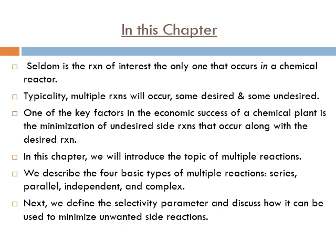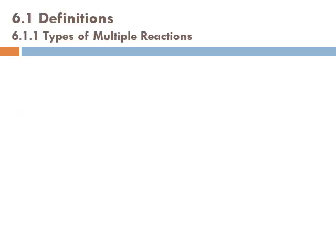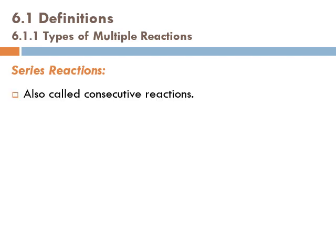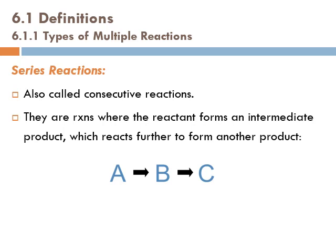In this chapter, we will introduce the topic of multiple reactions. We describe the four basic types: series, parallel, independent, and complex. Next we define the selectivity parameter and discuss how it can be used to minimize unwanted side reactions, and we will also discuss the yield. The first type is series reactions, also called consecutive reactions — reactions where the reactant forms an intermediate product which reacts further to form another product.